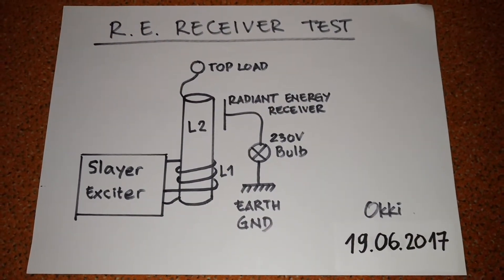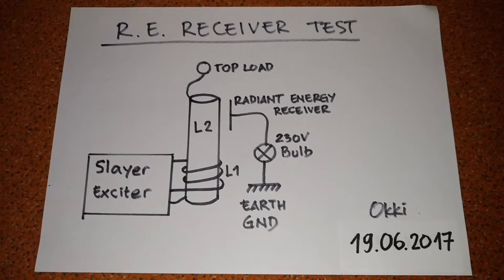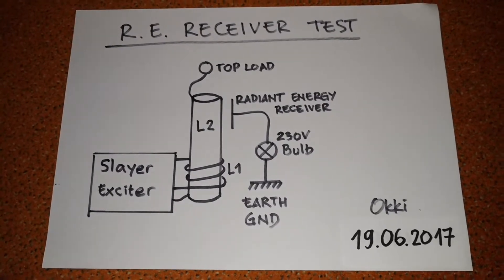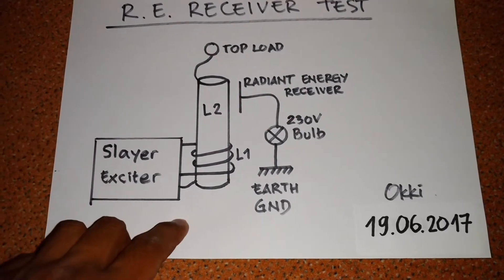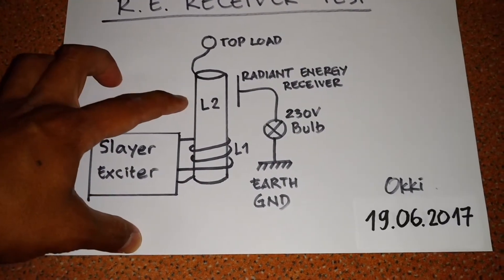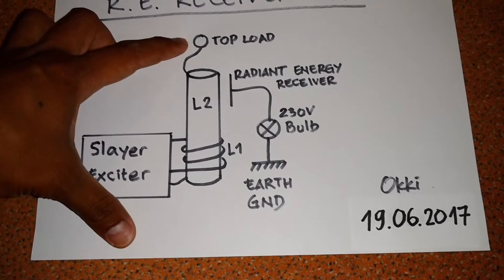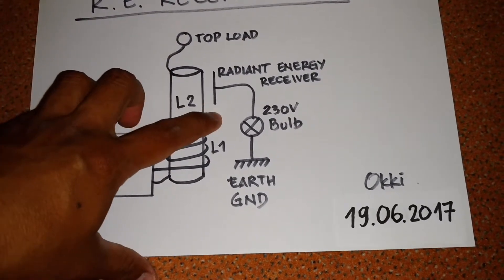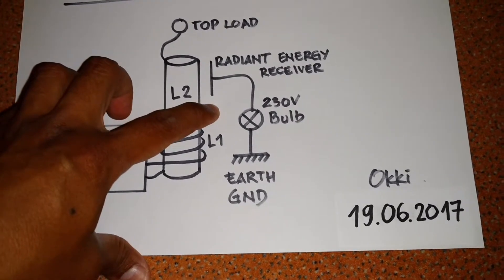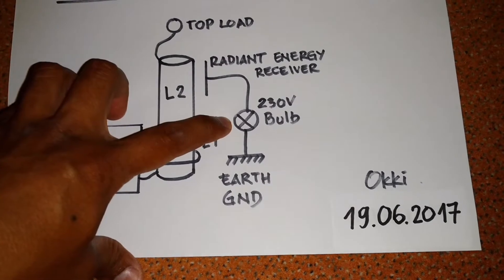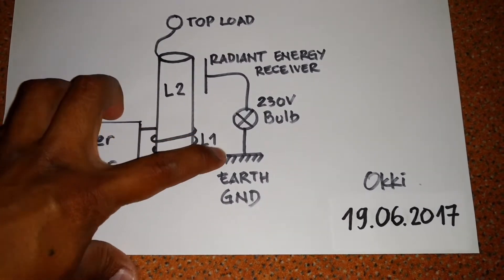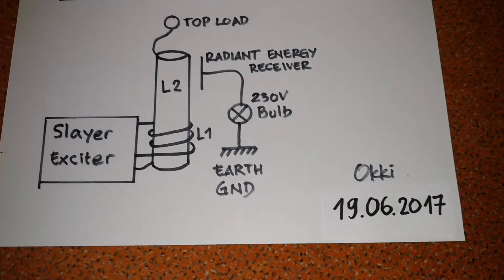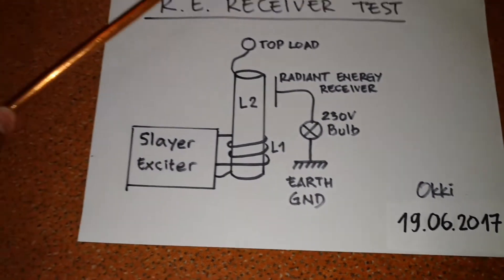Hi everybody, now I want to continue the radiant energy receiver test. As usual, I have a slayer exciter with primary and secondary coils, and the secondary coil has a top load. Here I have the receiver connected to a 230 volt light bulb and directly to the earth ground.